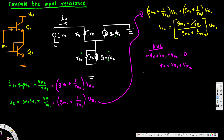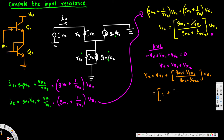We can substitute our expression for v52 into this. So vx equals v51 plus [(gm1 + 1/r51) / (gm2 + 1/r52)] · v51. Taking v51 as common: vx = [1 + (gm1 + 1/r51) / (gm2 + 1/r52)] · v51.